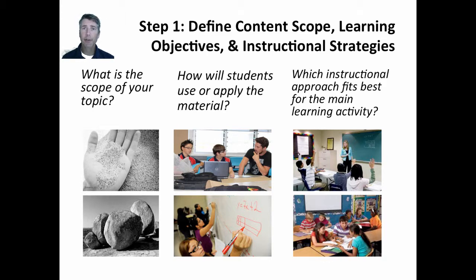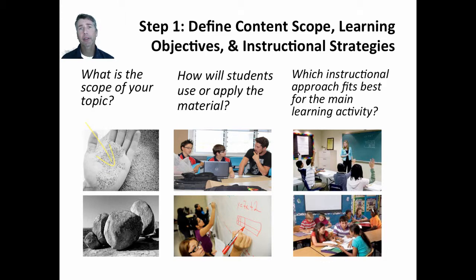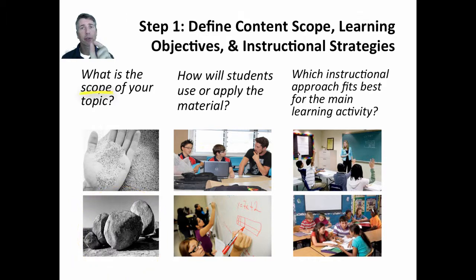The first question to ask yourself is what's the scope? Am I looking at a discrete one-day lesson — what we might call a fine grain size — or am I looking at a big unit plan with six weeks of instruction, which we would consider a large grain size lesson? So when we think about small versus large, we're thinking about the scope of the lesson. For MicroTeach 4, typically you're within a larger unit, but the lesson itself is small.